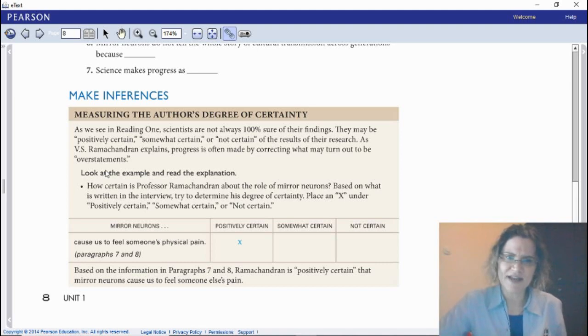As you can see in Reading 1, scientists are not always 100% sure of their findings. They may be positively certain, somewhat certain, or not certain at all of the results of their research. As Ramachandran explains, progress is often made by correcting what may turn out to be overstatements. They can't always be correct or always certain. How certain is Professor Ramachandran about the role of mirror neurons based on what is written in the interview? Try to determine his degree of certainty. Place an X under positively certain, somewhat certain, or not certain.